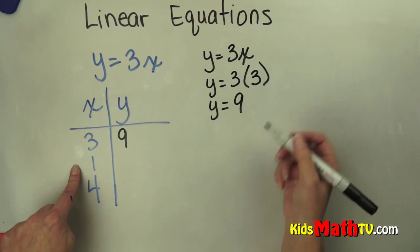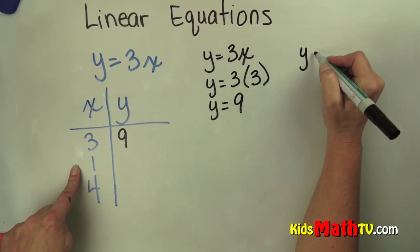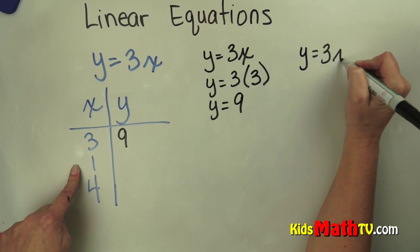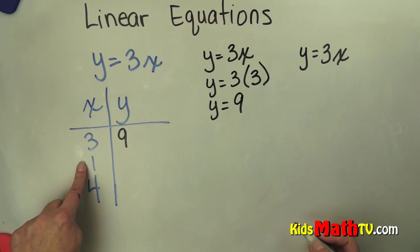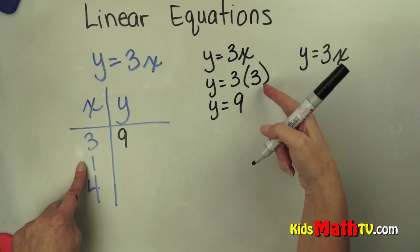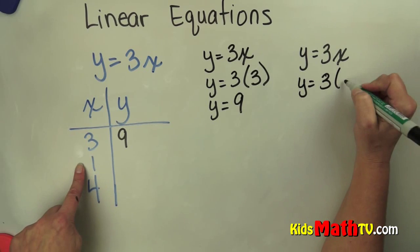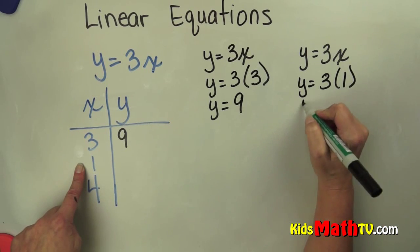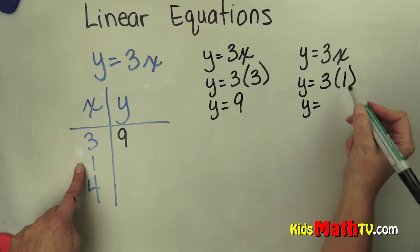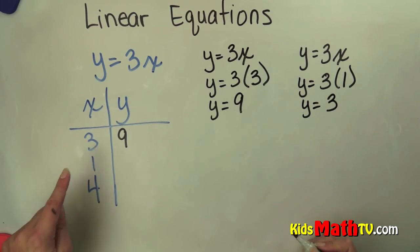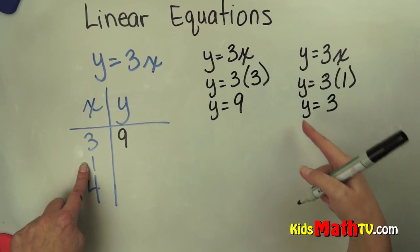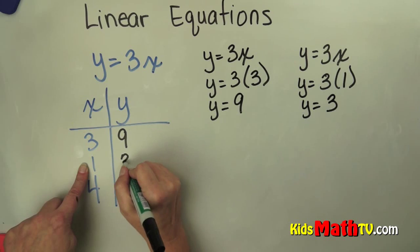Then I can do it again. I start with the equation y equals 3 times x. This time I'm going to use 1 for the x. So y equals 3 times 1. And y equals 3 times 1 is 3. So if x is 1, I substitute in and then y is 3.